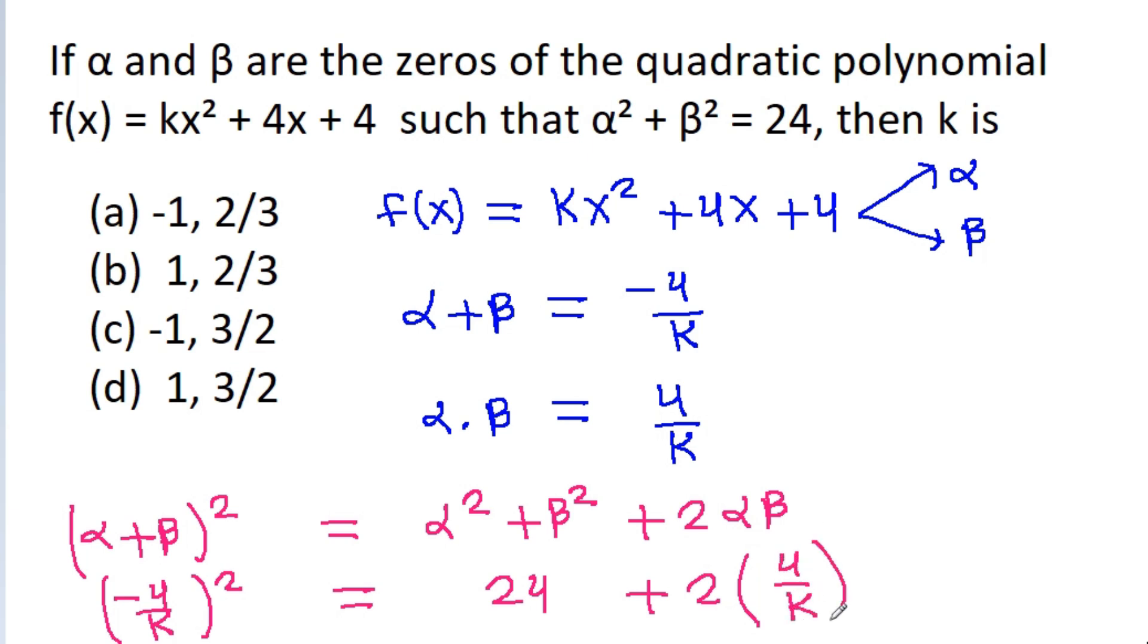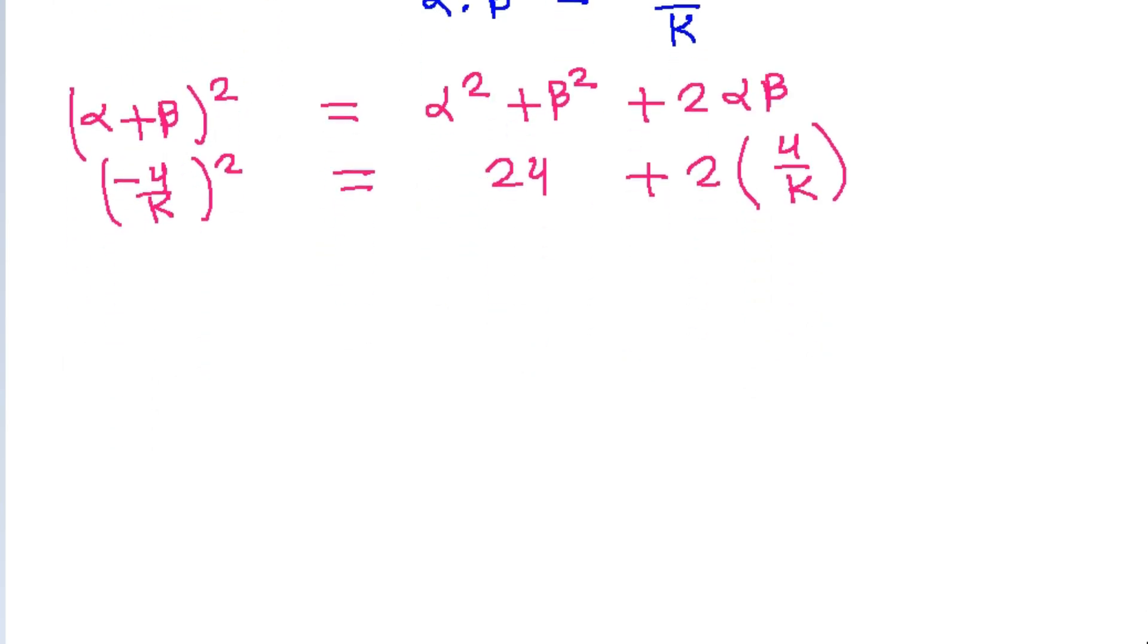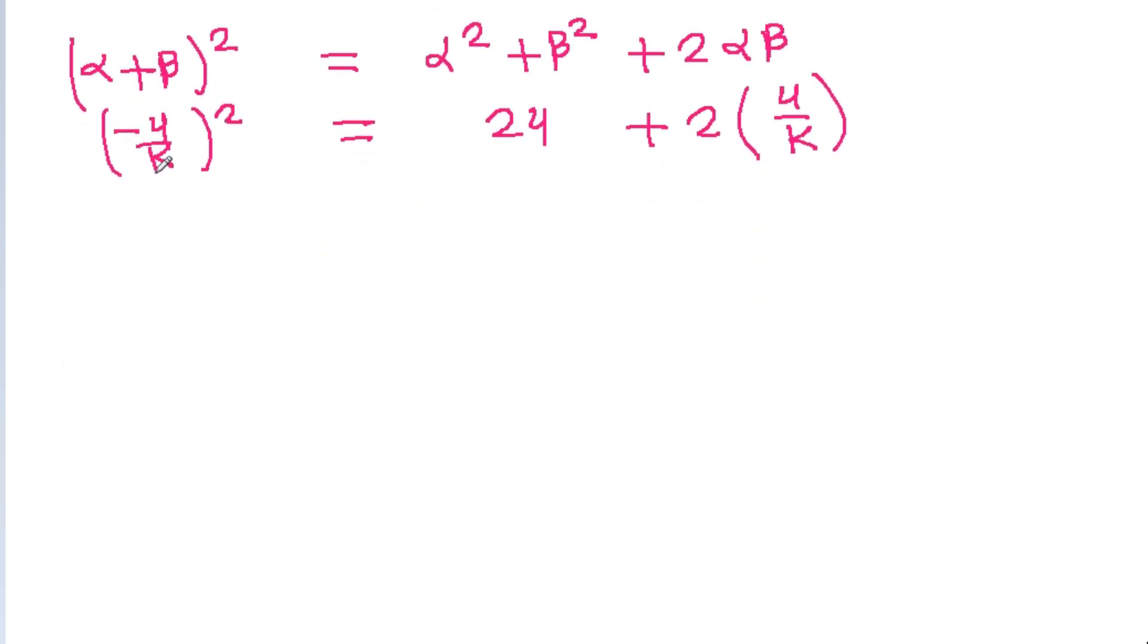So (-4/k)² is 16/k². And if we multiply both sides with k², then we get 16 = 24k² + 8k. And if we divide both sides by 8, then we get 2 = 3k² + k.